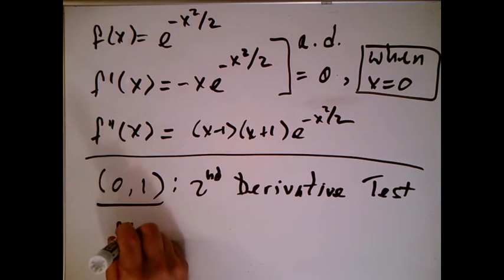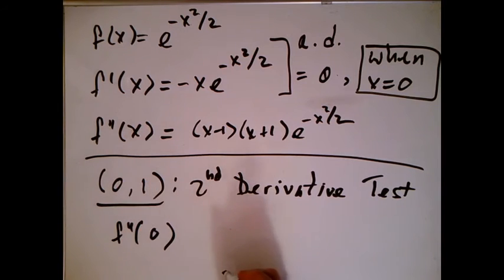The second derivative of zero here is just minus 1 times 1 times 1. That's just minus 1.